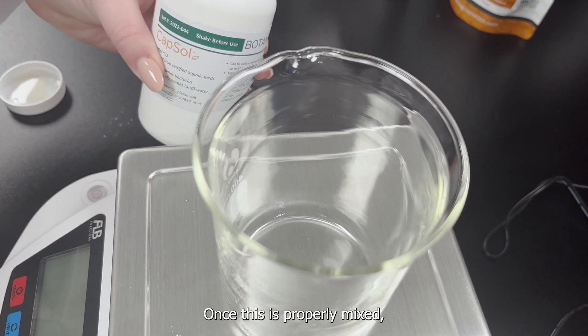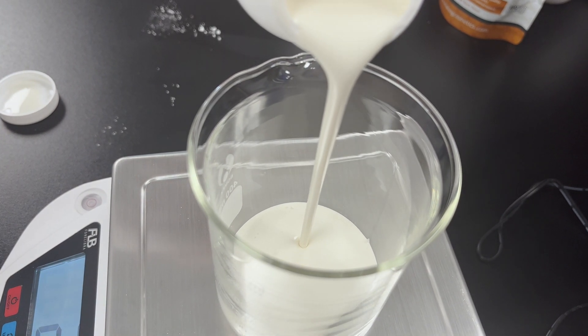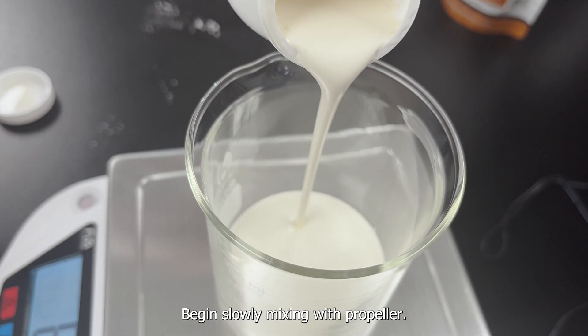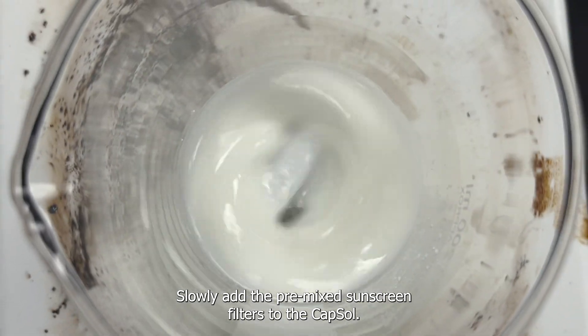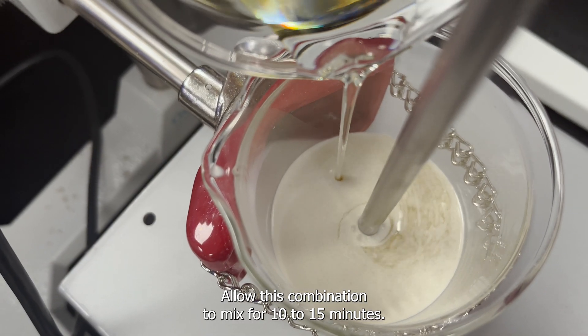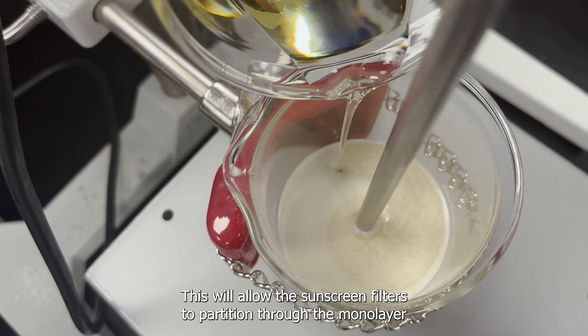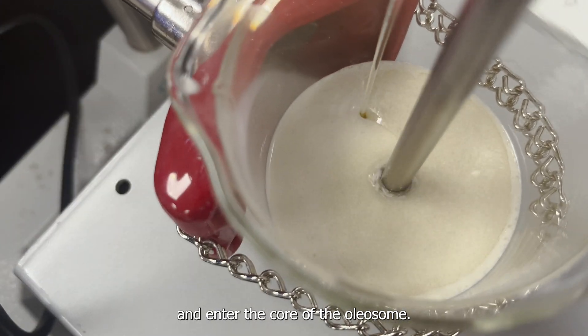Once this is properly mixed, we can then add the capsule to a separate beaker. Begin slowly mixing with propeller. Slowly add the premix sunscreen filters to the capsule. Allow this combination to mix for 10 to 15 minutes. This will allow the sunscreen filters to partition through the monolayer and enter the core of the oleosome.